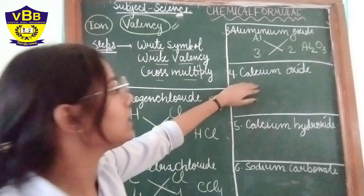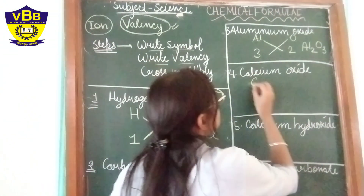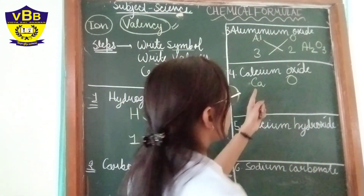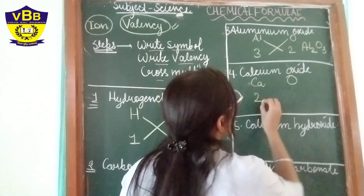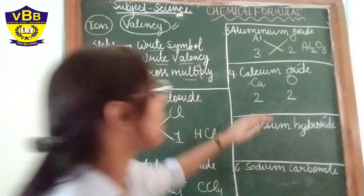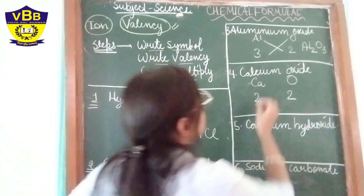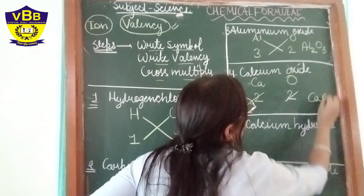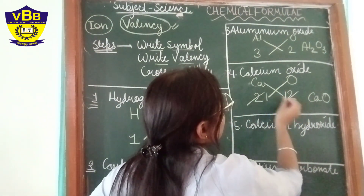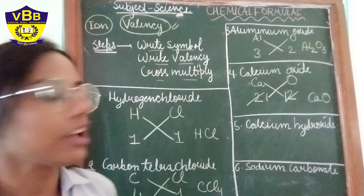Now let's look at calcium oxide. The symbol of calcium is Ca and the symbol of oxygen is O. The valency of calcium is 2 and the valency of oxygen is also 2. Since both are 2, we can cancel them out and each becomes 1. When we cross multiply, we get 1 calcium atom and 1 oxygen atom, so the formula is CaO.